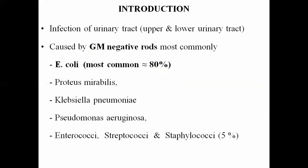The most common cause of UTI is bacterial infection, specifically gram-negative bacteria. Among gram-negative bacteria, approximately 80% of urinary tract infections are caused by E. coli. Other gram-negative bacilli include Proteus mirabilis, Klebsiella pneumoniae, and Pseudomonas aeruginosa. About 5% of UTIs are caused by gram-positive cocci such as Enterococci, Streptococci, and Staphylococci. The key point to remember is that E. coli causes 80% of UTI cases.